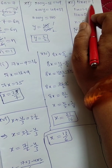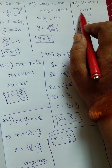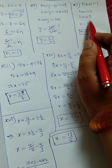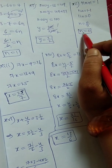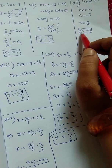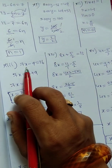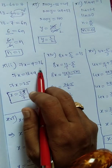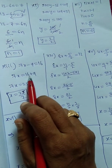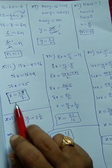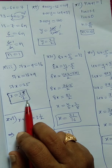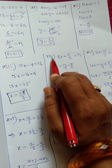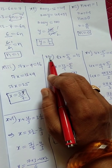Next, 12th bit: 11n plus 1 equals 1. So 11n equals 1 minus 1 — transpose of plus 1 becomes minus 1. 11n equals 0, n equals 0 by 11, which is just 0. So n equals 0. Next, 13th bit: 7x minus 9 equals 16. 7x equals 16 plus 9 equals 25. So x equals 25 by 7.